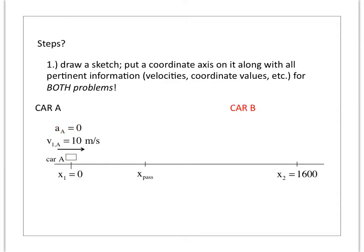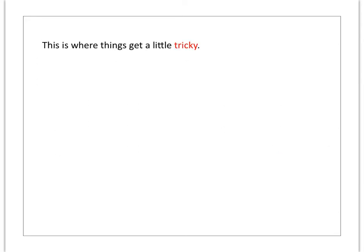Car B is moving to the left, passing through x equal to 1600 meters at t equal to zero, moving at minus 25 meters per second, minus because it's moving in the negative x direction. As for acceleration, that's a bit tricky.